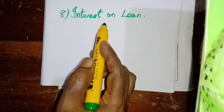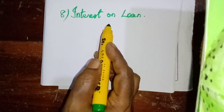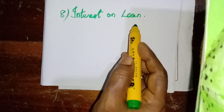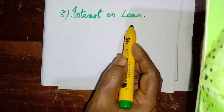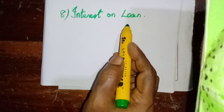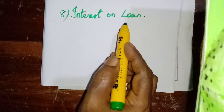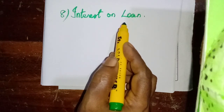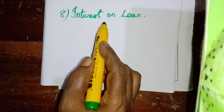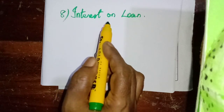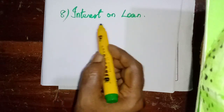For interest on capital and interest on drawings, we have the transfer entries also — adjusting entry plus transfer entry. But for interest on loan, we do not have any transfer entry. So just remember: for 2 adjustments, we have the transfer entries also.